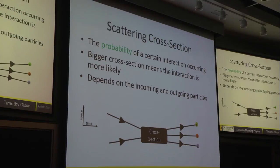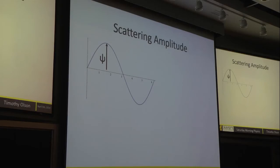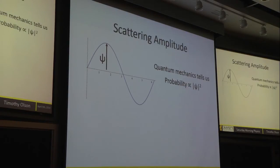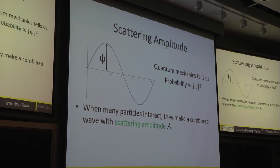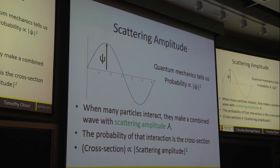As a theorist, I want to say: what did we expect the box to look like? Can we predict what we'll see inside? To do that, we need to study something called the scattering amplitude. Quantum mechanics tells us we should treat these particles as waves. A wave has a certain amplitude — the height of the wave, here called psi. Quantum mechanics tells us the probability of measuring a particle is proportional to the square of the amplitude. When many particles interact, their waves overlap, and we get the scattering amplitude A. The cross-section is related to the square of the scattering amplitude.